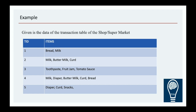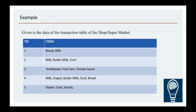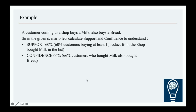Now confidence: given a person buying milk, how likely are they to also buy bread? We look only at the three transactions containing milk, and out of those, transactions 1 and 4 also contain bread. So confidence = 2/3, which is around 66%. This means that given milk is bought, you can associate bread with it and create schemes, discounts, or place them together on a shelf.